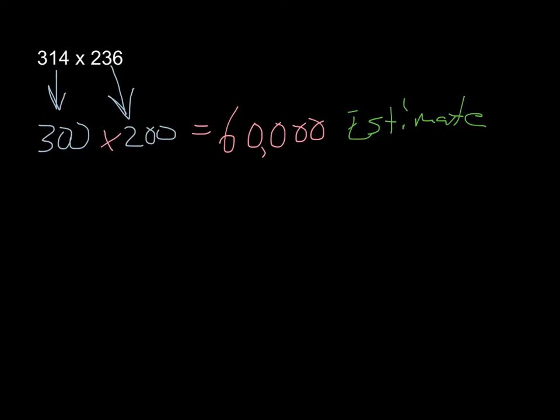Now let's set it up using the standard algorithm. We're going to have 314 times 236. Remember, we start with our ones. 6 times 4 is 24. So 6 times 1 is 6, plus 2 is 8. 6 times 3 is 18. Remember, that's 1,800.